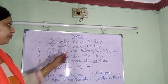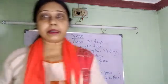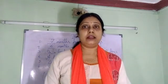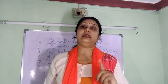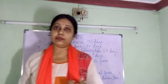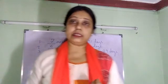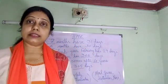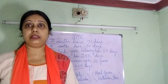Let me revise the important points. 7 months have 31 days, 4 months have 30 days, and February may have 28 or 29 days. If the year is a leap year, February has 29 days; normally February has 28 days. A year has 365 days, and in a leap year there are 366 days. A leap year comes after every 4 years.